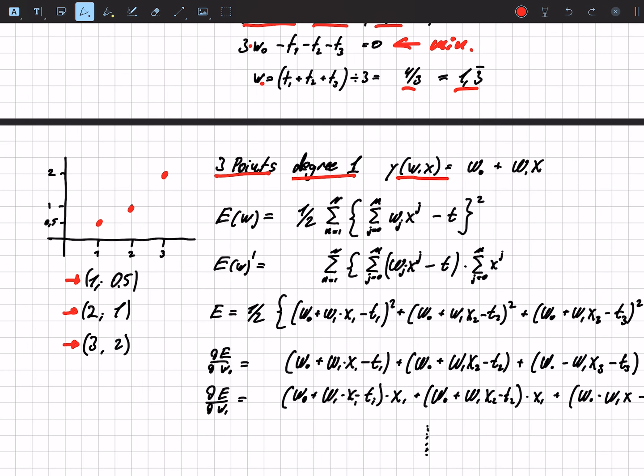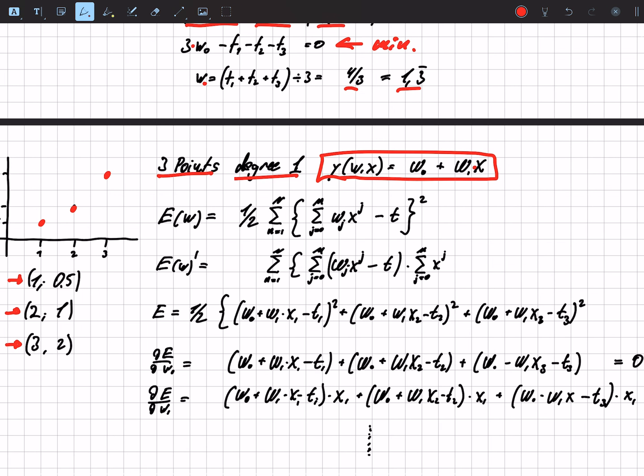So this is our polynomial that we choose, we have w0 plus w1 times x. So again, we have the error function, and this is just one single option to choose the error function. The error function can be chosen arbitrarily, but in this case with the derivation, it simplifies the whole problem so that it's useful for understanding what is actually going on.